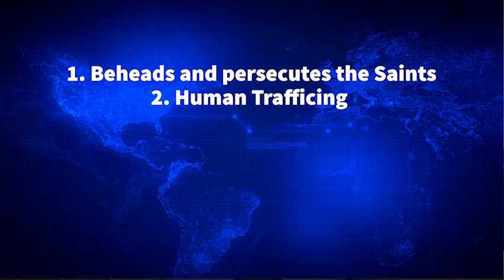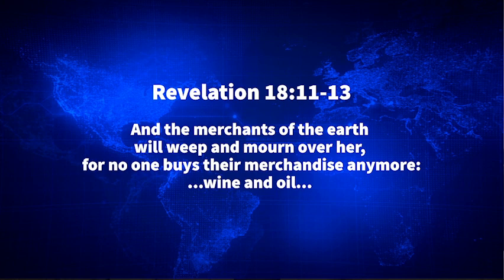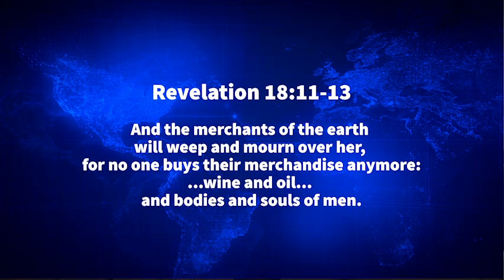The second sign: this system will be involved in human trafficking. Revelation 18 verse 13 says the merchants of the earth will weep over the harlot that rides the beast because no one buys their merchandise anymore. It mentions wine and oil — about two-thirds of the world's oil comes from the Middle East today — but it also says they trafficked in bodies and souls of men. This practice of trafficking little boys and girls sexually for profit has happened historically in the Islamic Empire and is known to be occurring in Saudi Arabia and other nations.